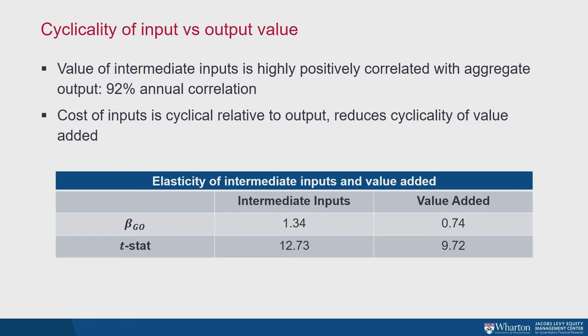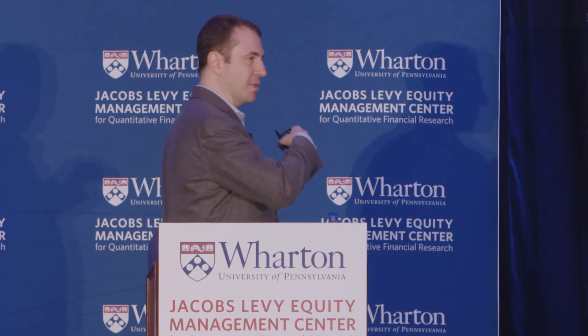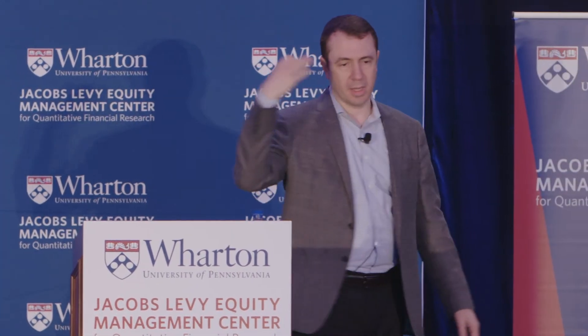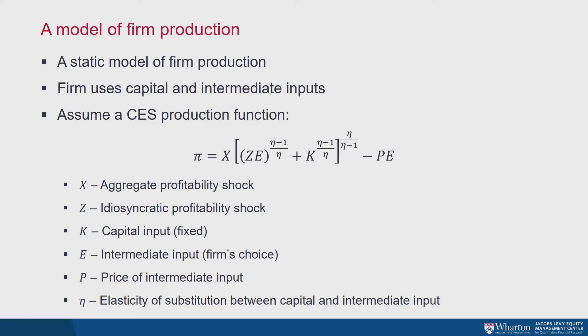This is where we diverge from the current literature, where people are quick to model firm costs as fixed. When you look at the data, there is a lot more nuance — a big chunk of costs is very far from fixed; it's actually more cyclical than revenue. With this motivation, let me introduce a mathematical structural model describing firm production, and then we can discuss additional empirical facts within the framework of this model to help organize our thinking.